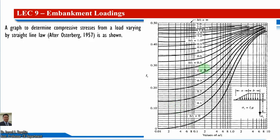We have a chart to determine compressive stresses from a load varying by straight-line law, after Osterberg 1957. The horizontal axis shows the ratio a over z, and the curves represent different values of b over z starting from 0, 0.1, 0.2, and so on. Using b over z and a over z together, we can read the influence factor I_z from the vertical axis.